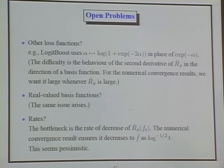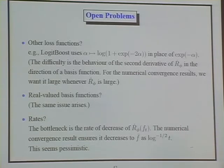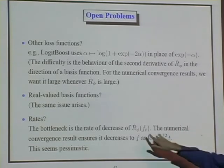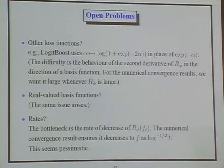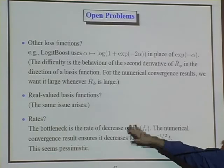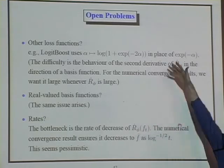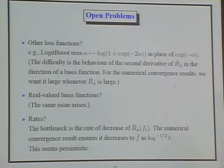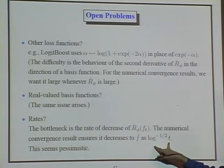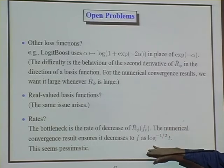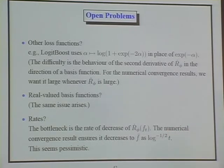The rates we get when we look at everything together — the convergence rate of the phi risk to the optimal — the bottleneck is the numerical result. Although we know from the behavior of the exponential function that we're approaching the best in some L1 ball, the numerical result tells us we get close at a terrible rate: one over the square root of a log of the number of steps. That seems incredibly pessimistic, and it's the bottleneck if we want explicit rates on the convergence to the optimum.